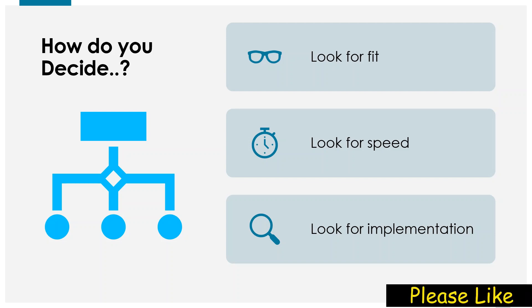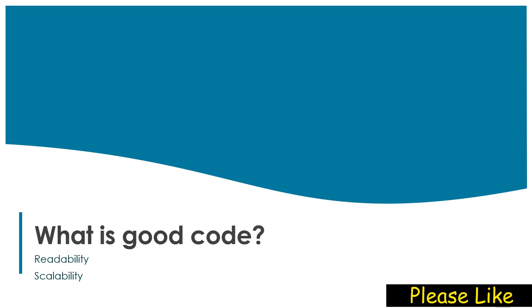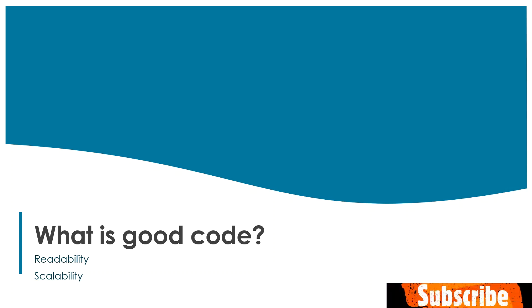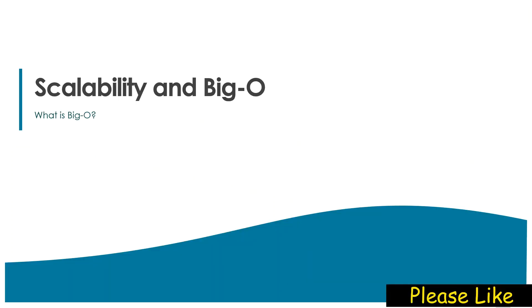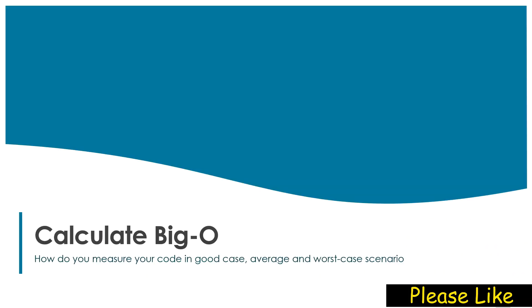How do you decide on a good algorithm? Look for fit, look for speed, look for implementation. What is good code? We already discussed readability and scalability. Readability means your code should be readable, and scalability means your code should be future-proof — when new requirements come in, your code should be scalable. I connected scalability with Big O notation, which we have already talked about.